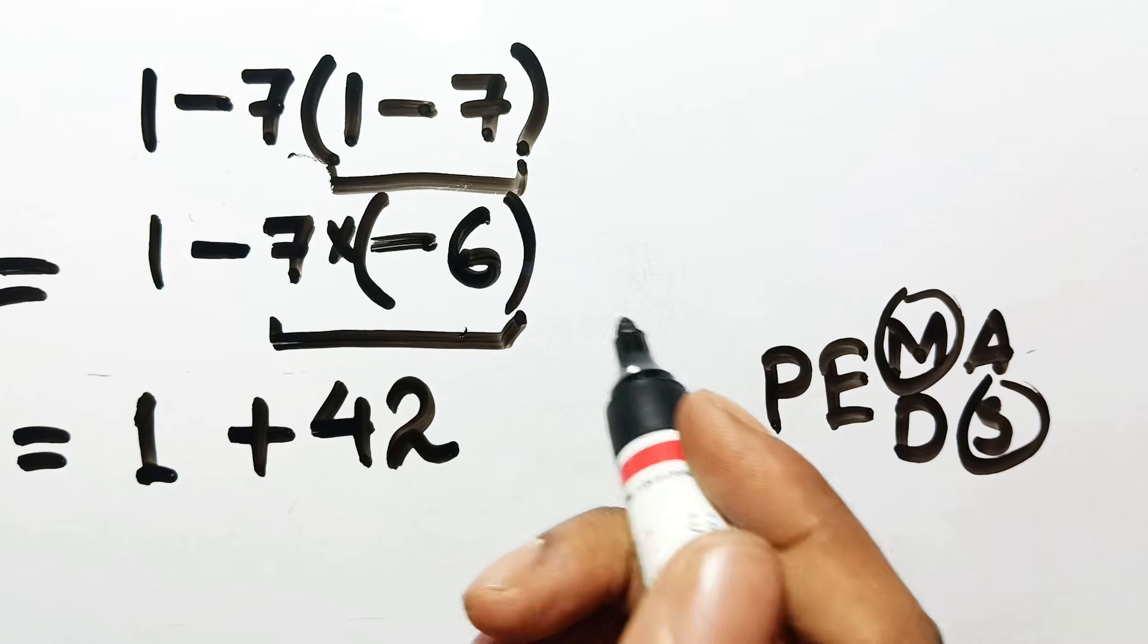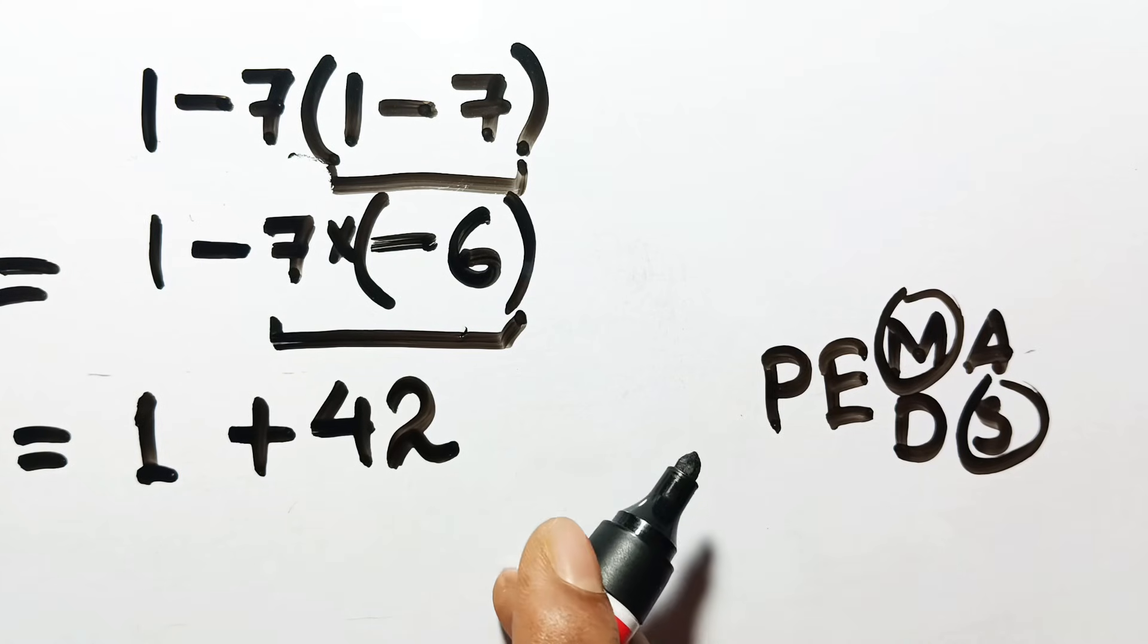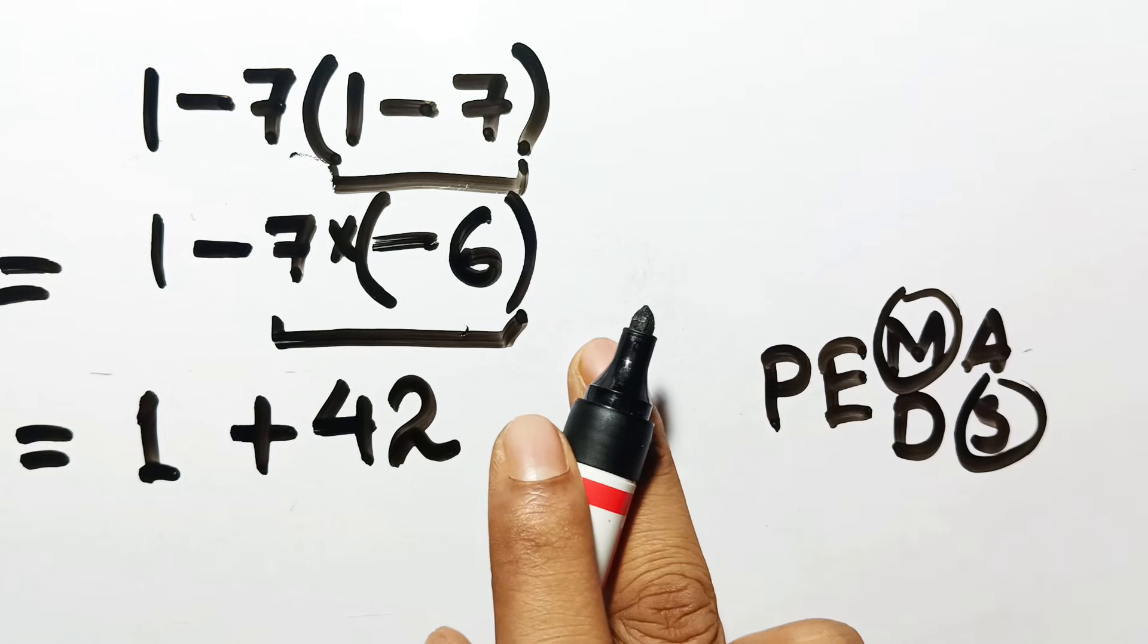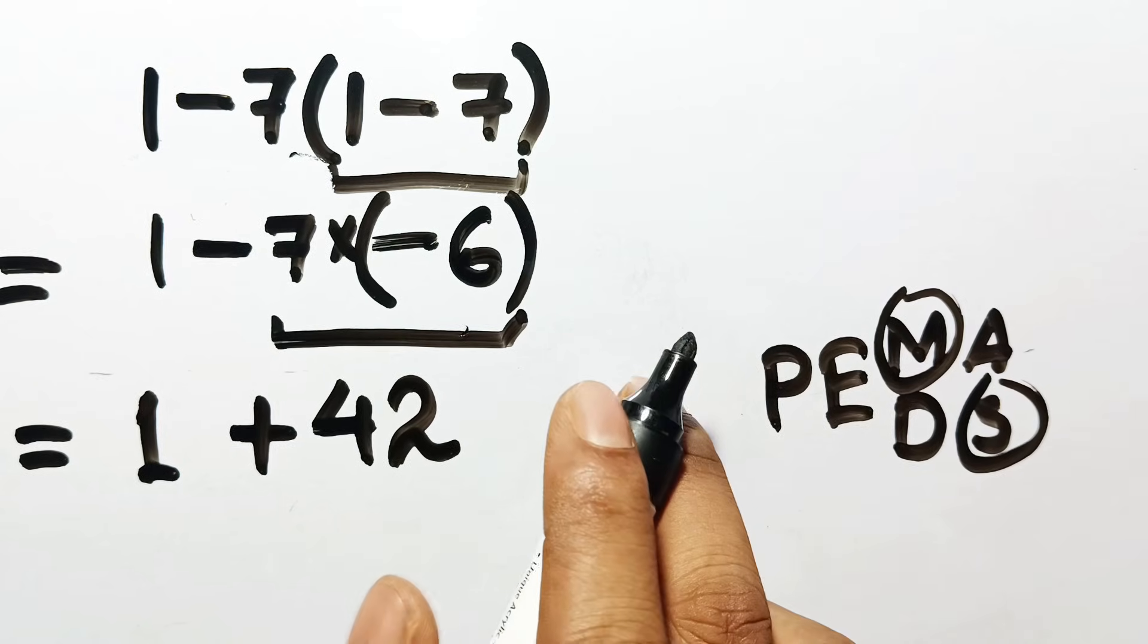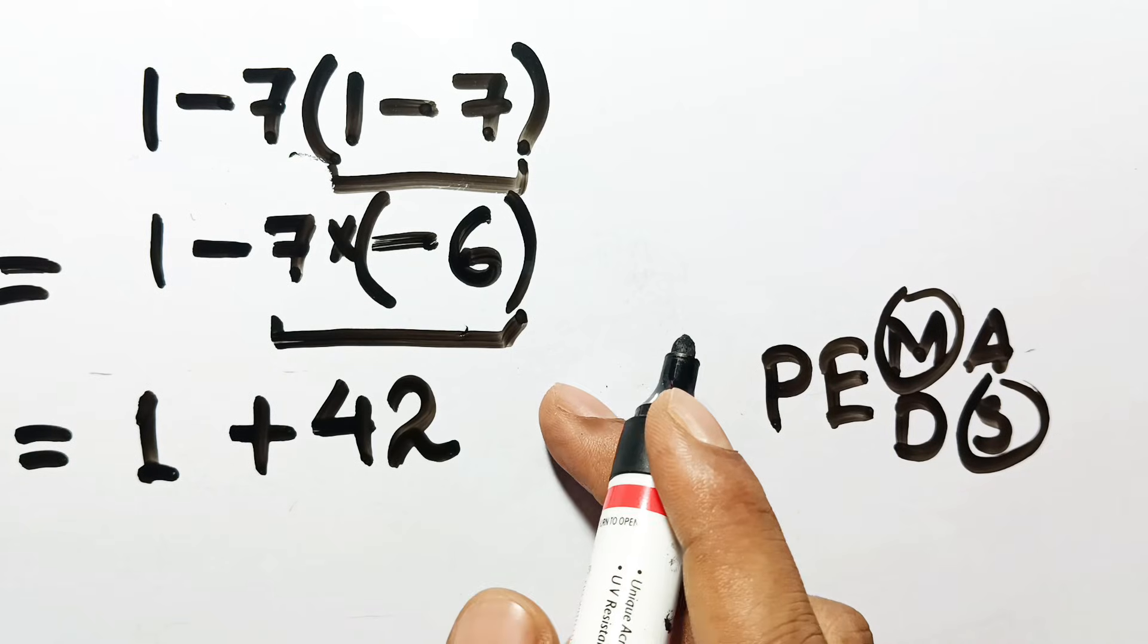By subtracting first, we ignored the priority of the multiplication. Before I reveal the final number, comment your answer below. I will look for the best explanation to be the pinned comment for this video.